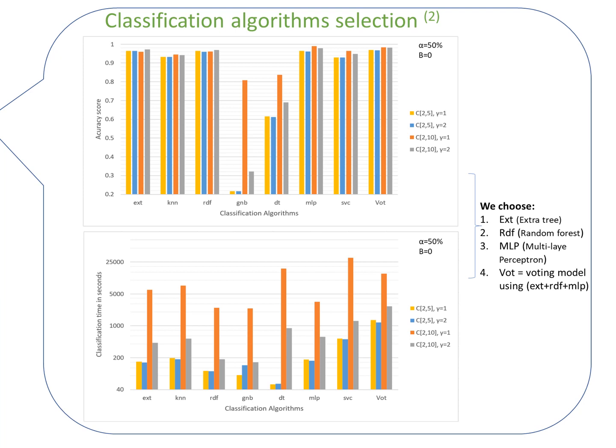Based on the processing time and the quality of the classification, we choose decision tree, extra tree, and multi-layer perceptron. A voting model based on the selected algorithms is also added to the comparison.